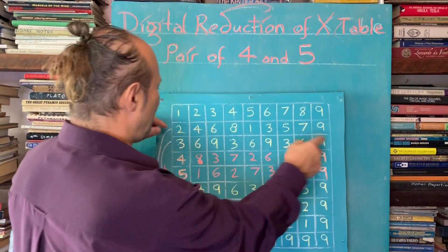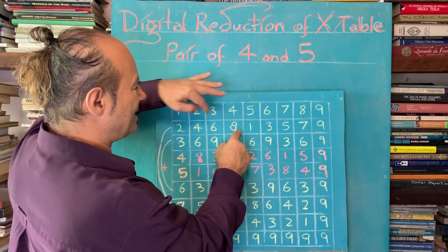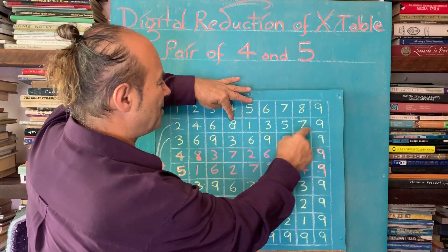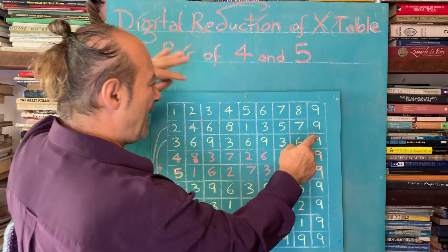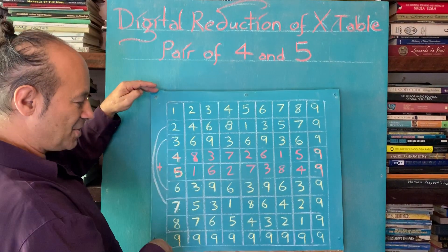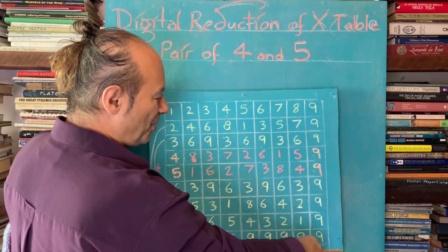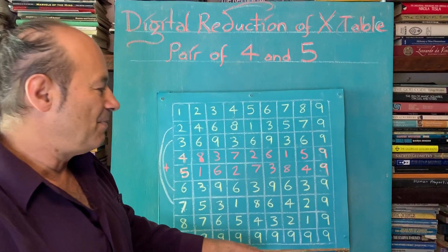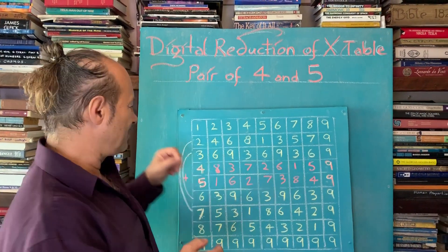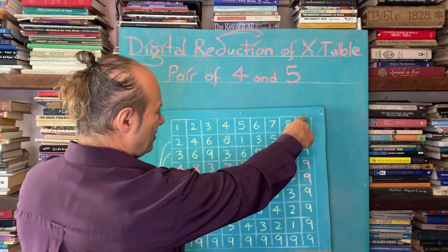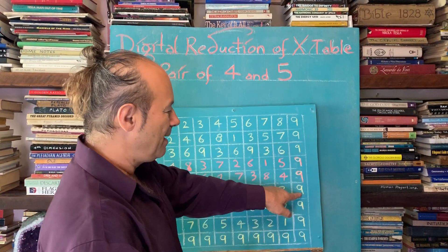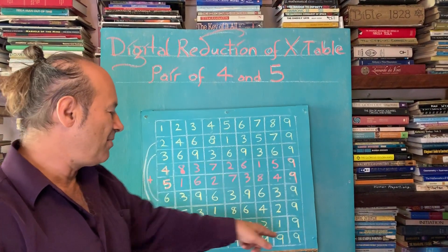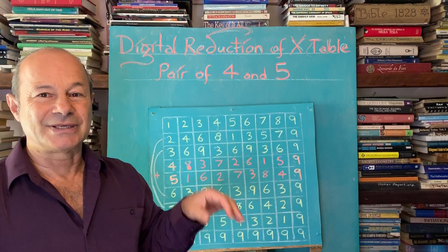With the two times table it went two, four, six, eight — even numbers — then shifted to the odd numbers one, three, five, seven. And when you look at all the times tables you can see all the nines are in this column and this bottom row, because nine is indestructible. Nine multiplied by any number — for example six times nine is 54, and five plus four is nine — so nine always reduces back to itself. Nine is what underpins all creation; it's that magic number.